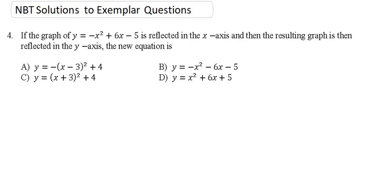Hey guys, so we are on to question 4 of the NBT solutions to the exemplar questions. It says if the graph of y equals minus x squared plus 6x minus 5 is reflected in the x-axis, and then the resulting graph is then reflected in the y-axis, the new equation is... and then it gives you four options. So we're first reflecting in the x-axis and then the resulting graph is then reflected in the y-axis. So we're doing two things here.